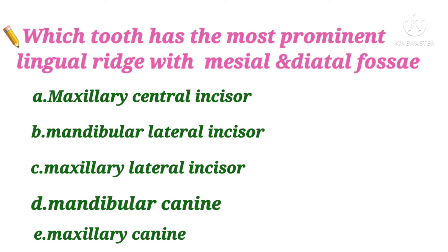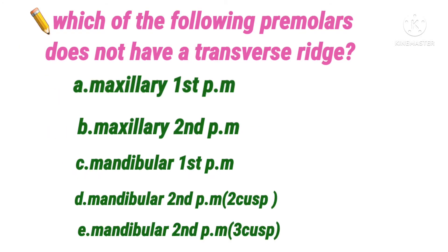Next question: which tooth has the most prominent lingual ridge with mesial and distal fossae? Option A maxillary central incisor, B mandibular lateral incisor, C maxillary lateral incisor, D mandibular canine, E maxillary canine. The answer is maxillary canine. Both maxillary and mandibular canines have characteristic labial and lingual ridges, but those on the maxillary canine are more prominent.